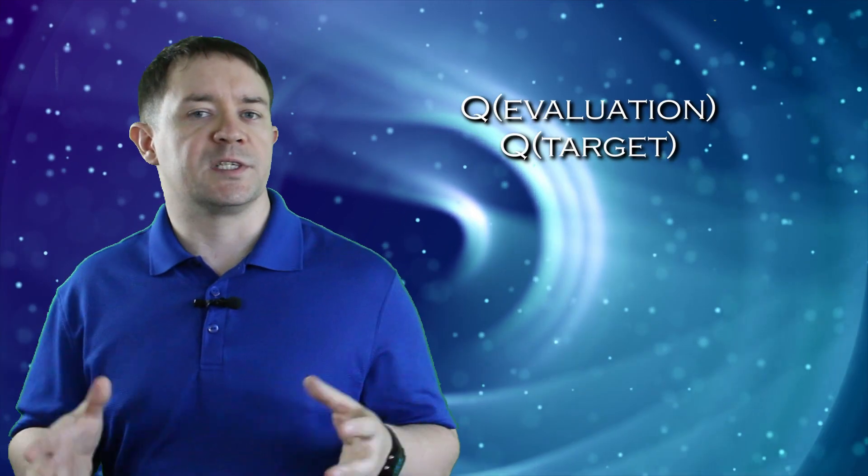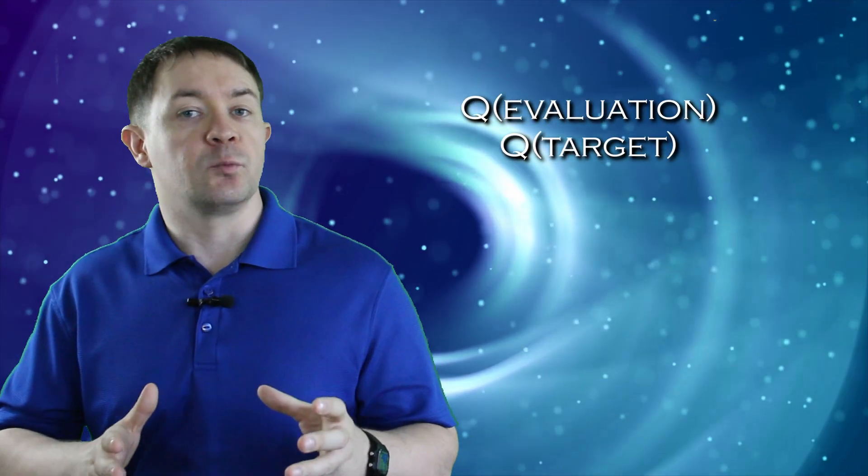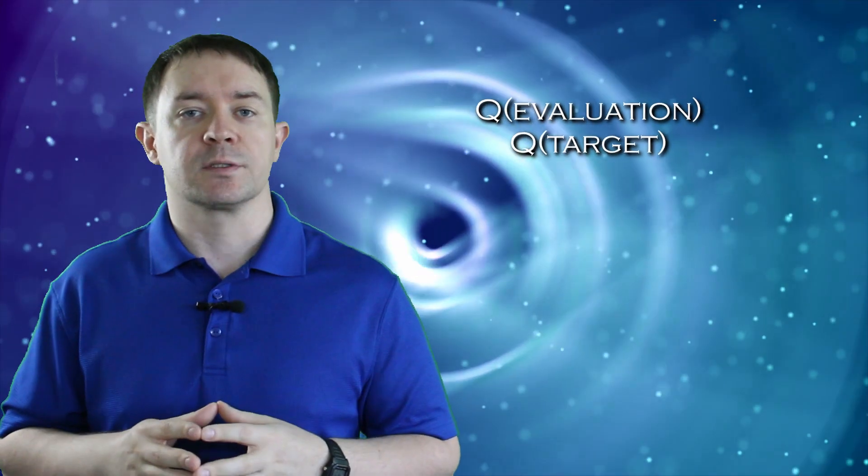So let's talk implementation. In practice, we end up with two deep neural networks. One network, called the evaluation network, is to evaluate the current state and see which action to take, and another network, called the target network, that is used to calculate the value of maximal actions during the learning step.